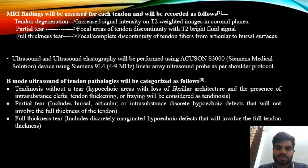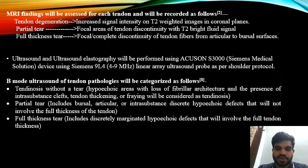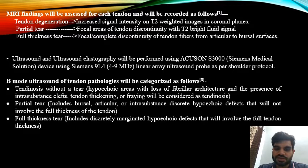B-mode ultrasound tendon pathologies were categorized as follows: tendinosis without tear showing hypoechoic areas with loss of fibrillar architecture and intrasubstance clefts; tendon thickening or fraying was considered as tendinosis; partial tear includes bursal, articular, or intrasubstance discrete hypoechoic defects not involving the full thickness of the tendon; and full thickness tear includes discretely marginated hypoechoic defects involving the full tendon thickness.